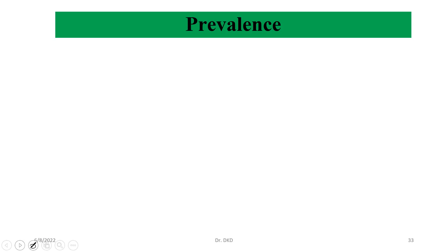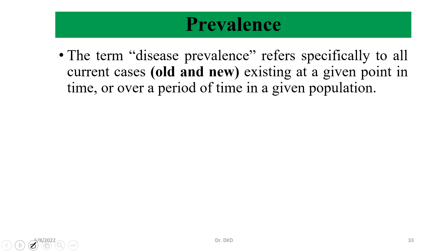Hello, here we will discuss about prevalence. As we know, prevalence is one of the important measurements of morbidity. The term disease prevalence refers specifically to all current cases — like old or follow-up cases and new cases — meaning new patients existing at a given point in time or over a period of time in a given population.